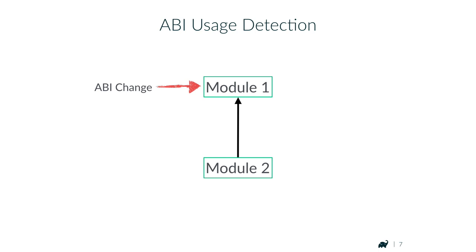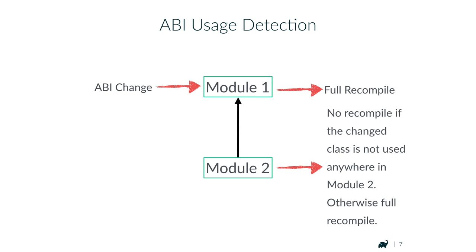The next optimization is a bit more fine-grained: ABI usage detection. In the case of an ABI change in module 1 — changing the public signature — a full recompile of module 1 still happens. With compile avoidance, you would also do a full recompile of module 2. But with ABI usage detection, there is a further check: you can analyze whether any of the classes that changed in module 1 are used at all in module 2. If they are not used, module 2 is not recompiled. Otherwise, it's fully recompiled.